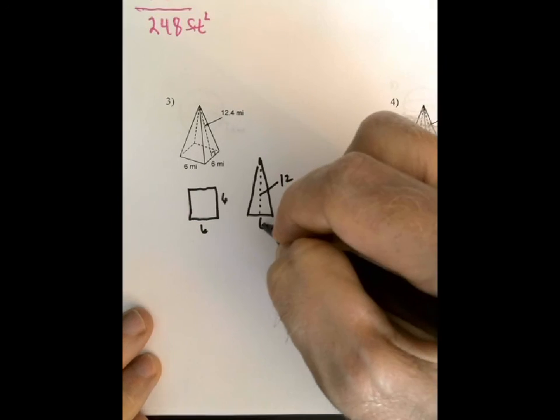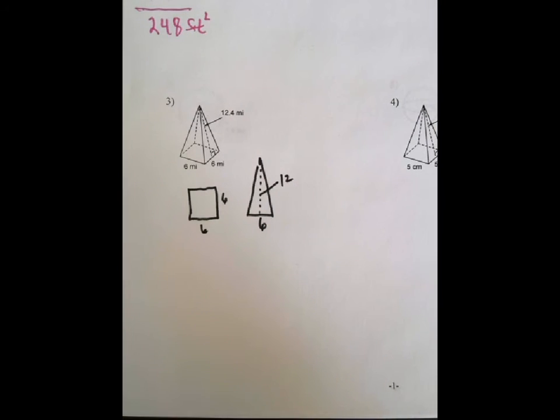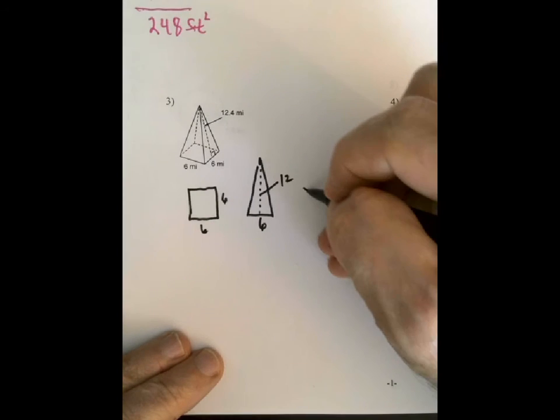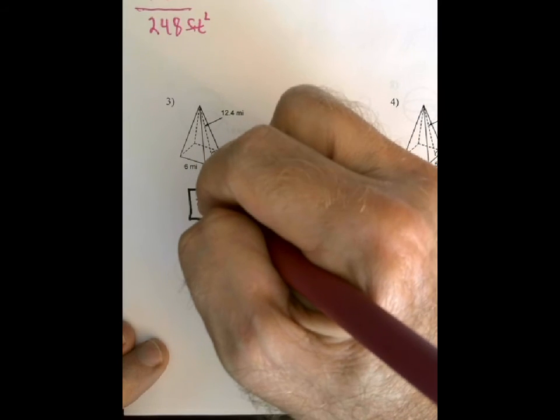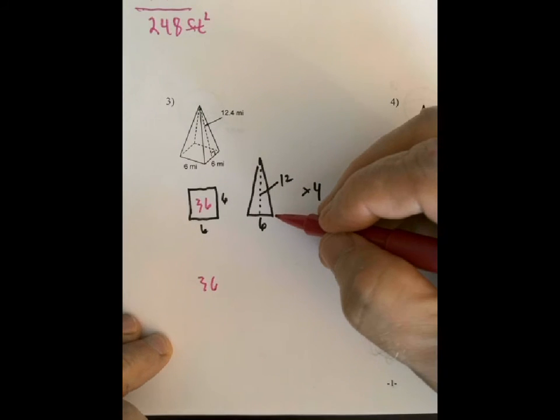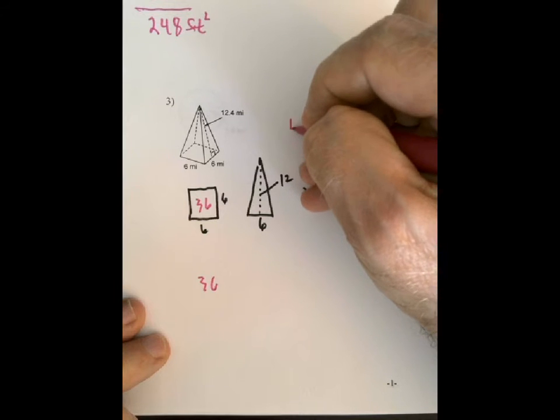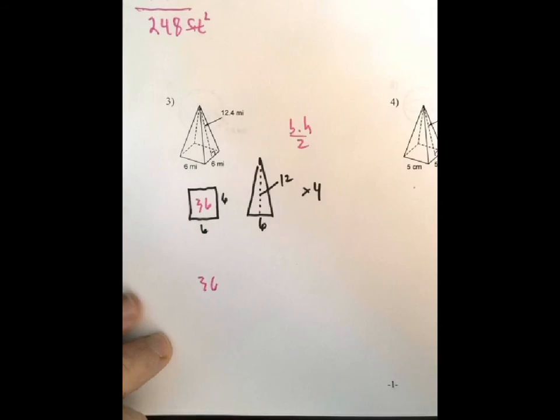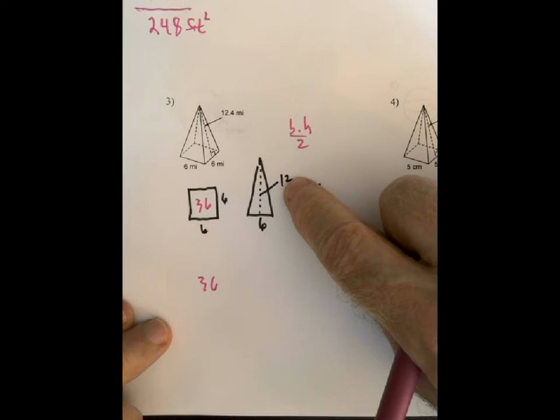There's four of them so that's going to be times 4. So 6 times 6 is 36, and there's only one of them so it's just 36. Now remember that for the area of the triangle, you know, base times height divided by 2. Don't forget to divide by 2. 6 times 12 is 72.